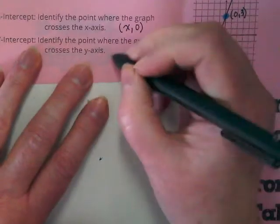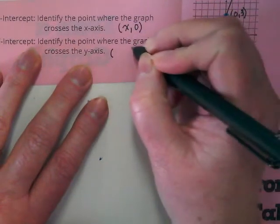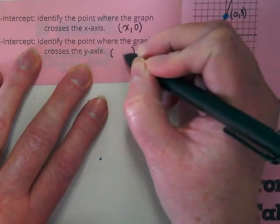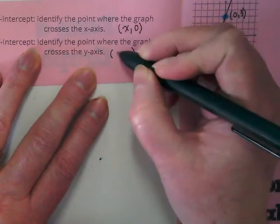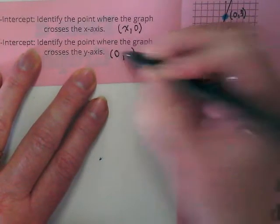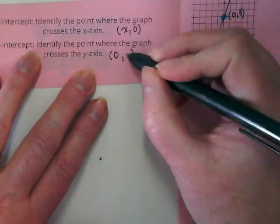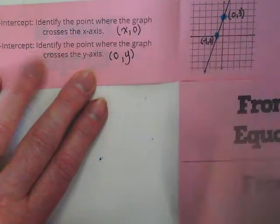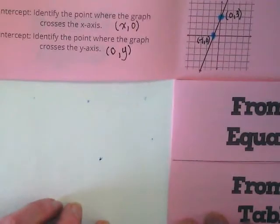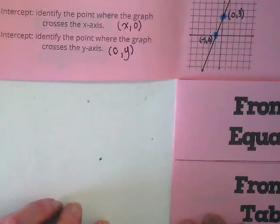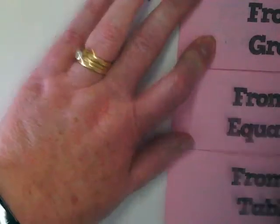So what do you think is true about the coordinate pair for a y-intercept? It should be the opposite. 0 is in the x-place. The number where it will cross the y-intercept is in the y-place. Keep that in mind.